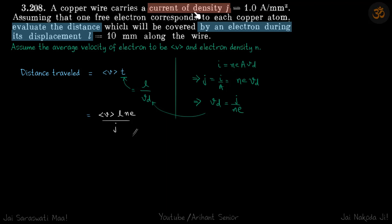We are given a copper wire of current density J. We need to evaluate the distance covered by an electron during its displacement L. This displacement will be along the wire because the current is flowing and we need to find the distance covered by the electron.